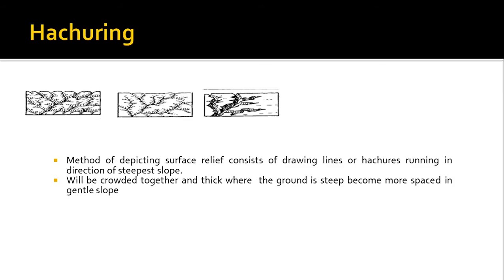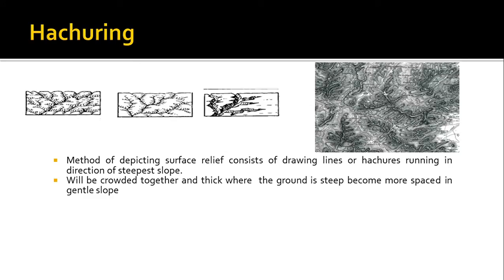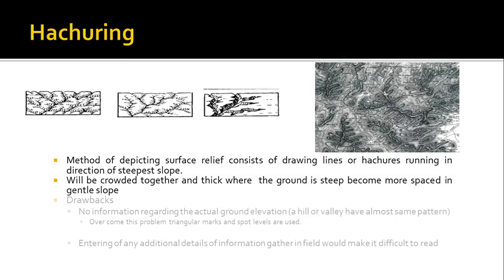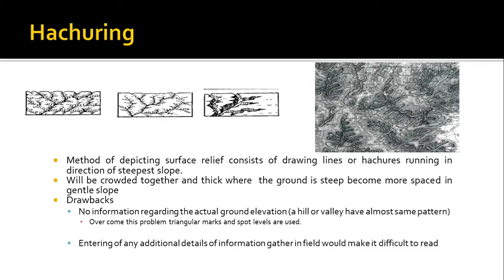And this is a hachured map of some location. The drawback of this is that there is no information regarding the actual ground elevation. You can see the image and say that this is a valley, but you may feel the same thing as a hill. So this will be confusing. There is no direct representation of the ground elevation, and that is the biggest drawback. A valley as well as a hill can have the same pattern.